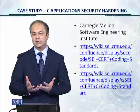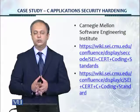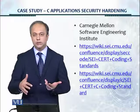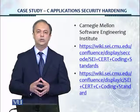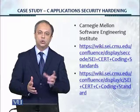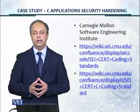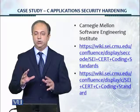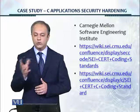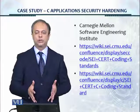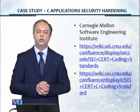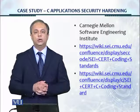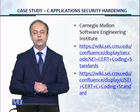For developers of C language applications, there's a lot of great information available free of cost. In the eight-step security hardening process, step number two is research, and then step number three is to take those controls and put them into an Excel template so we can track and follow each step of the hardening process. This gives the person who validates the implementation something to work with. Step number four is to develop an SOP, and step number five is to implement the controls in a test environment — an alpha, beta, or pilot environment.